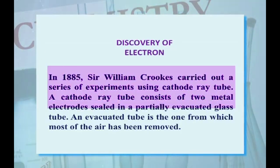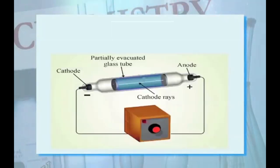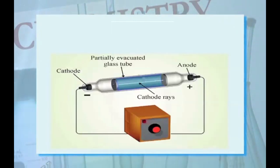Discovery of electron: In 1885, Sir William Crookes carried out a series of experiments using a cathode ray tube. A cathode ray tube consists of two metal electrodes sealed in a partially evacuated glass tube — an evacuated tube being one from which most of the air has been removed. The negatively charged electrode is called cathode, whereas the positively charged electrode is called anode. These electrodes are connected to a high voltage source, as shown in the figure below.